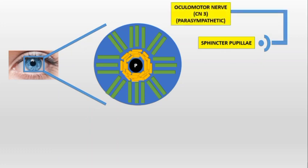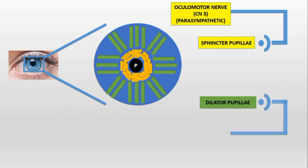The muscles radiating outward are called the dilator pupillae. The dilator pupillae is supplied by the sympathetic nerves. Remember: sphincter pupillae is supplied by the parasympathetic, and the dilator pupillae is supplied by the sympathetic nerves.